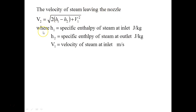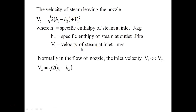The velocity of steam leaving the nozzle is: V₂ = √(2(H₁ − H₂) + V₁²), where H₁ is specific enthalpy at inlet and H₂ is specific enthalpy at outlet in J/kg. Values are typically in kJ/kg, so multiply by 1000 when solving. Normally the inlet velocity is very low compared to exit velocity V₂, so we can ignore it. When inlet velocity is not given, use: V₂ = √(2(H₁ − H₂)).